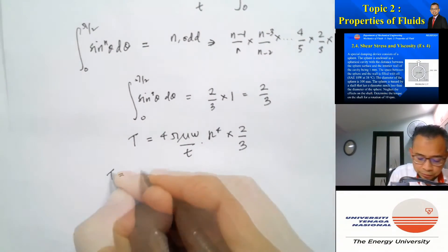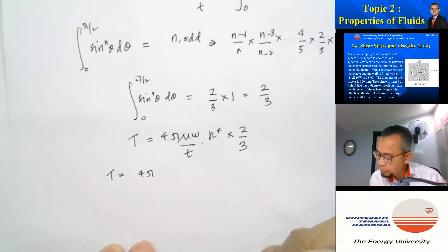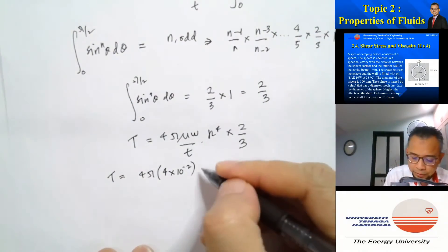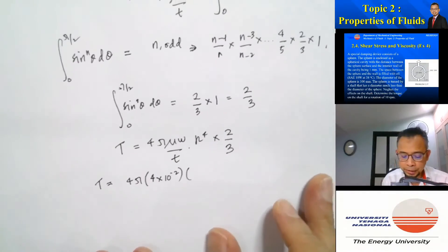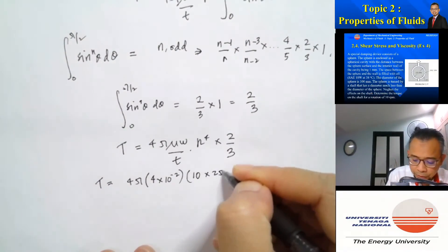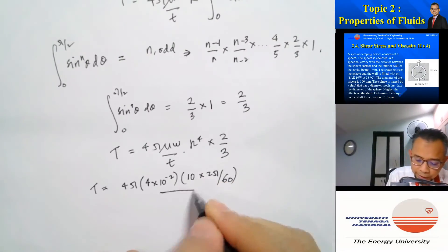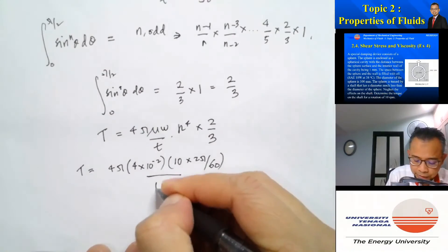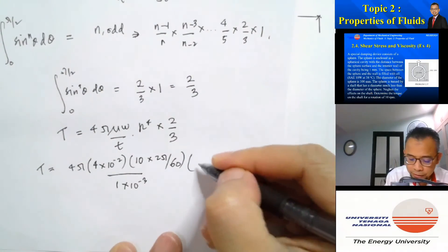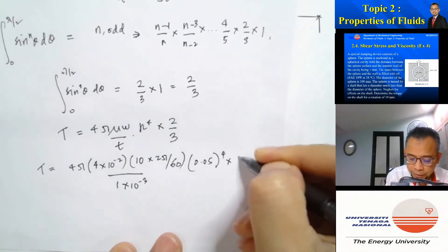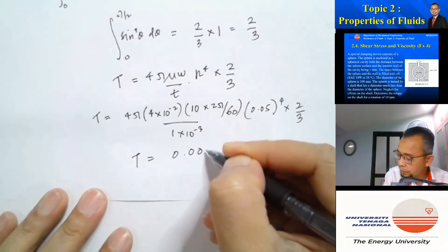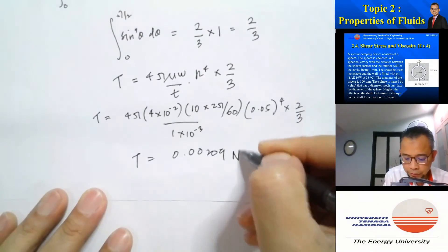Substituting the numbers: mu from the chart is 4×10⁻² Pa·s, omega is 10 rpm converted to radians per second by multiplying by 2π/60, the oil thickness is 1×10⁻³ m (1 mm), and the radius is 0.05 m (100 mm diameter). Multiplying everything by 2/3 gives a total torque of 0.00209 newton-meters.